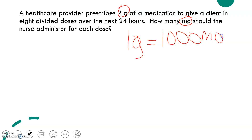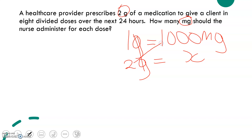If one gram is equal to 1,000 milligrams, two grams is how many milligrams? A lot of you may be able to calculate it in your head and say 2,000. But if you need a step-by-step method, this is one way. One gram equals 1,000 milligrams, and two grams will equal X. Grams will cancel grams — you cross-multiply. Two times 1,000 gives you 2,000, so X equals 2,000 milligrams.